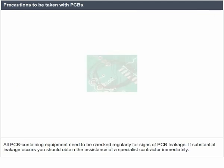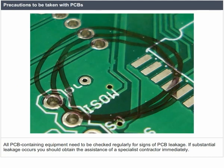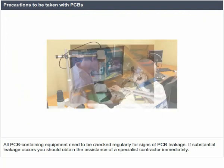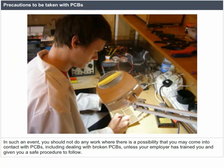Precautions to be taken with PCBs: All PCB-containing equipment need to be checked regularly for signs of PCB leakage. If substantial leakage occurs, you should obtain the assistance of a specialist contractor immediately. You should not do any work when there is a possibility of contact with PCBs, including dealing with broken PCBs, unless your employer has trained you and given you a safe procedure to follow.